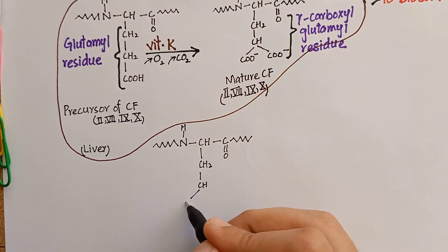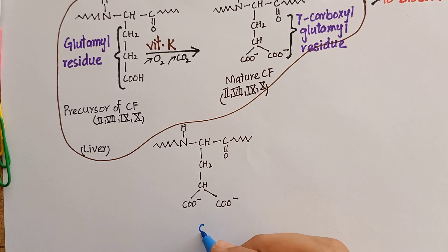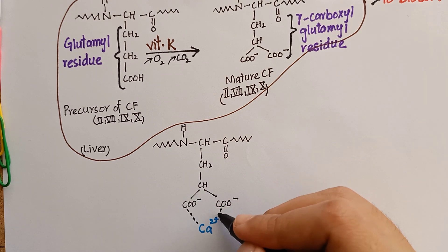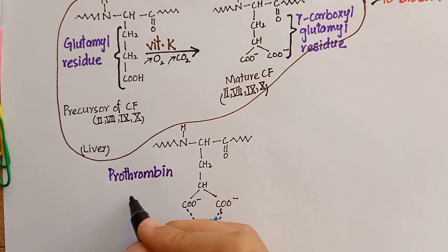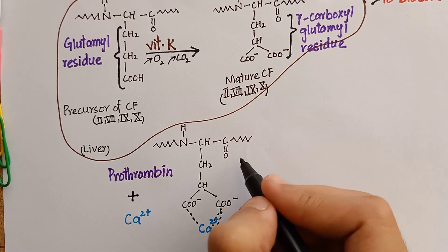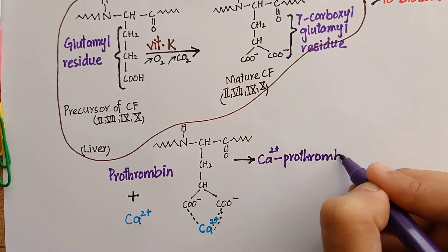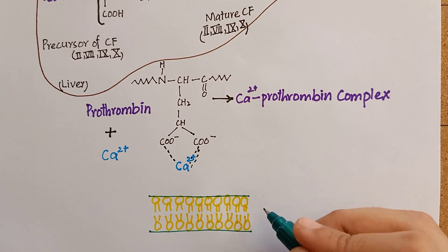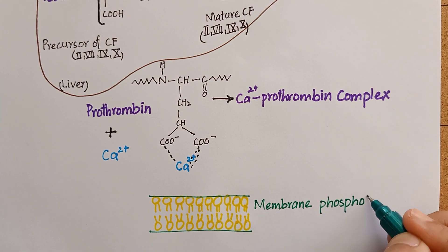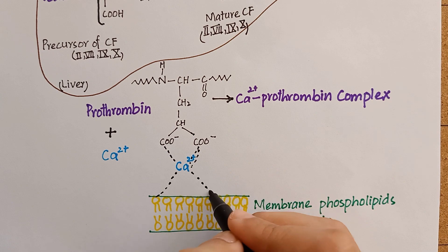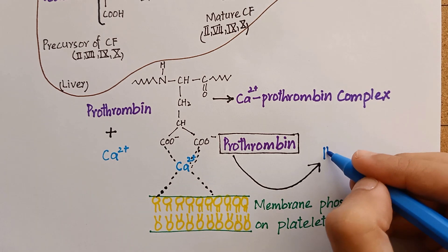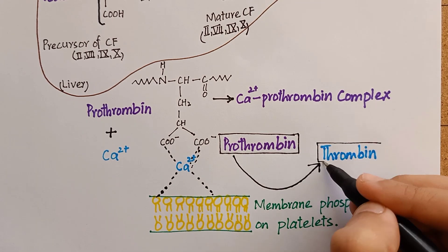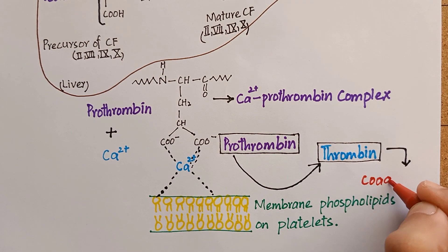This mature molecule of the clotting factor carries an extra negative charge, which binds to positively charged calcium ions in the blood to form a complex. For example, clotting factor 2, which is prothrombin, forms a prothrombin-calcium complex. This prothrombin-calcium complex binds to the phospholipids on the membrane of platelets, leading to the conversion of prothrombin to thrombin. This is how vitamin K helps in coagulation.